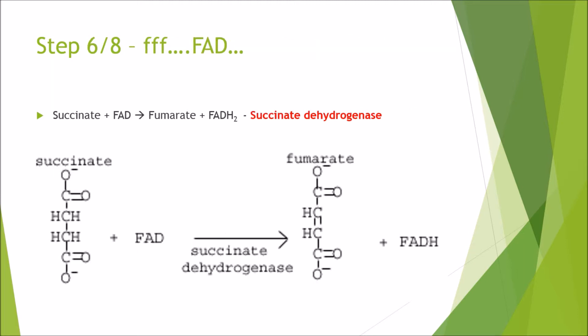Step 6 of 8 is FAD. Succinate goes with FAD, one of our electron carriers, to form fumarate and reduced FAD — hence the FAD label. That is catalyzed by succinate dehydrogenase. All we are doing is cleaving off these two hydrogens and adding them onto our electron carrier.